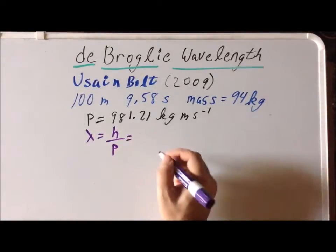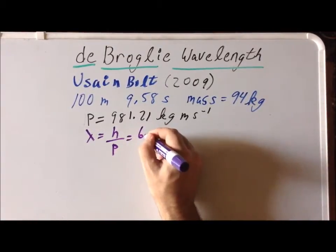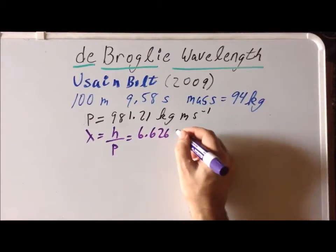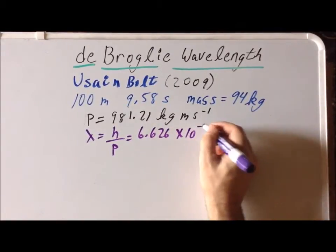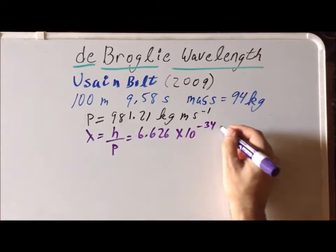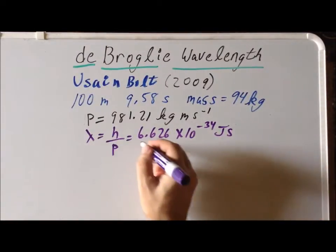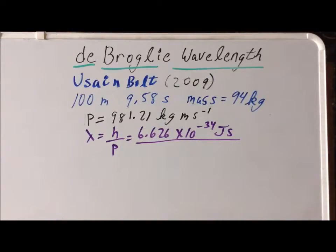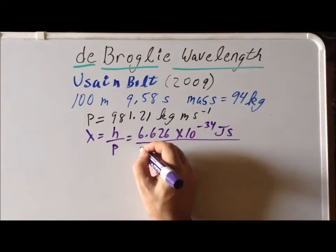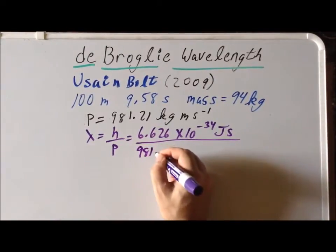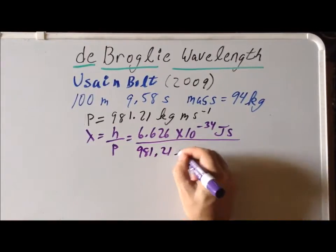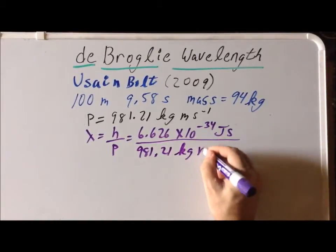We recall that Planck's constant has a value of 6.626 times 10 to the minus 34 joule seconds. Also recall that we have calculated Usain Bolt's momentum during his world record run as being 981.21 kilogram meters per second.